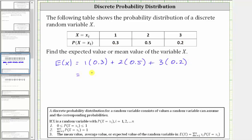Simplifying, 1 times 0.3 is 0.3, plus 2 times 0.5 is 1, plus 3 times 0.2 is 0.6, giving an expected value or mean value of 1.9. I hope you found this helpful.